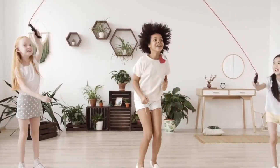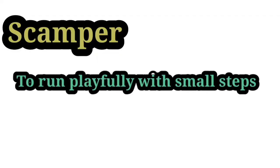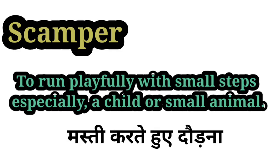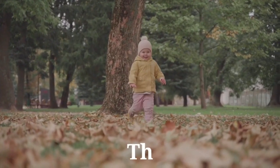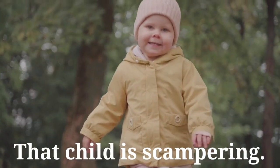जिस तरह से मस्ती में उछल-कूद करने, दौड़ने के लिए हमने skip word यूज किया था, उसी तरह से एक और word यूज होता है — Scamper. यह word छोटे-छोटे बच्चों के लिए यूज होता है, जो छोटे-छोटे कदमों के साथ दौड़ते-भागते-खेलते और उछल-कूद करते हैं. Definition: To run playfully with small steps, especially a child or small animal. Example: That child is scampering — यानि वो बच्चा मस्ती में उछल-कूद रहा है, दौड़ रहा है.